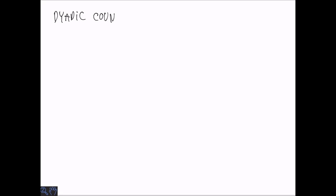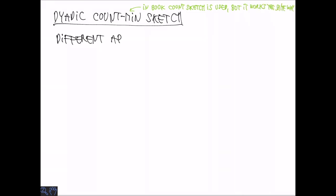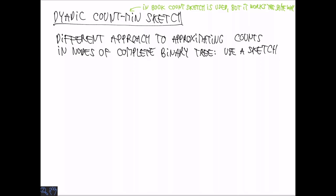The next summary we are going to look at is the so-called dyadic count min sketch. In the book there is a discussion of the dyadic count sketch, which is exactly the same thing except that count sketch is used rather than count min. But it works essentially the same way. The idea is to use a count min sketch to compress the counts in a complete binary tree.